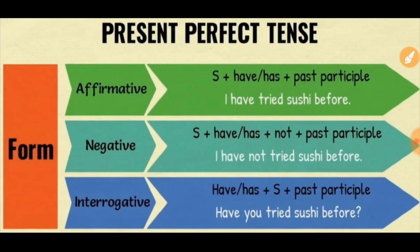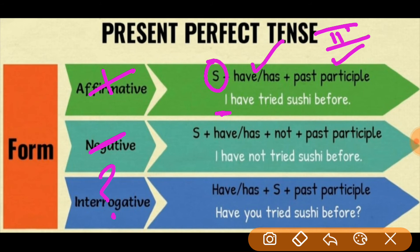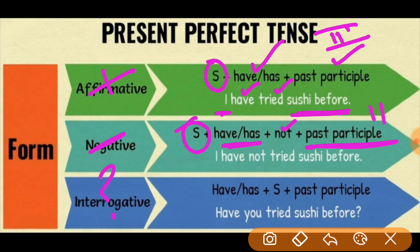In an affirmative sentence: subject — has or have — past participle (third form). For example: 'I have tried.' In a negative sentence: subject — has or have — not — past participle. For example: 'I have not tried.' In an interrogative sentence: has or have — subject — past participle — question mark.